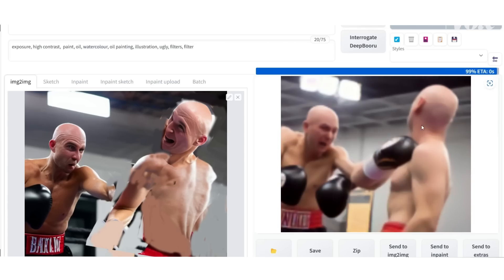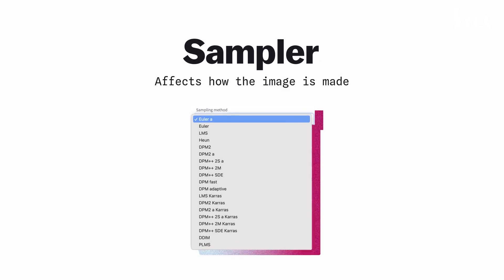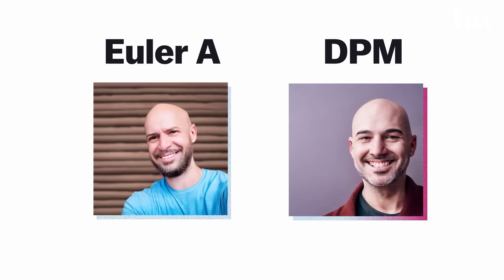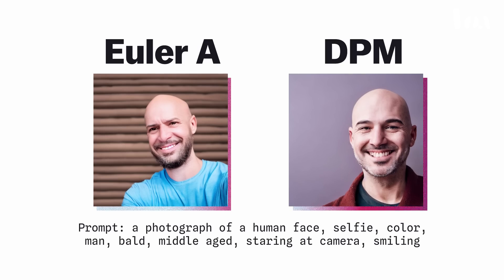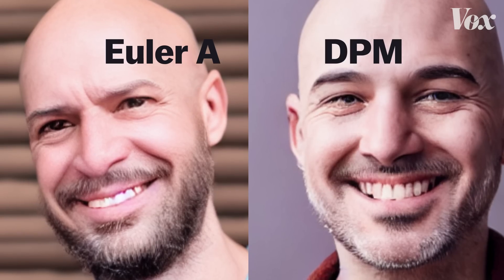I always use different samplers because the sampler is very important in terms of realism and details. If you're trying to replicate skin, Euler is very synthetic and very fake, but DPM, for example, works great for that.